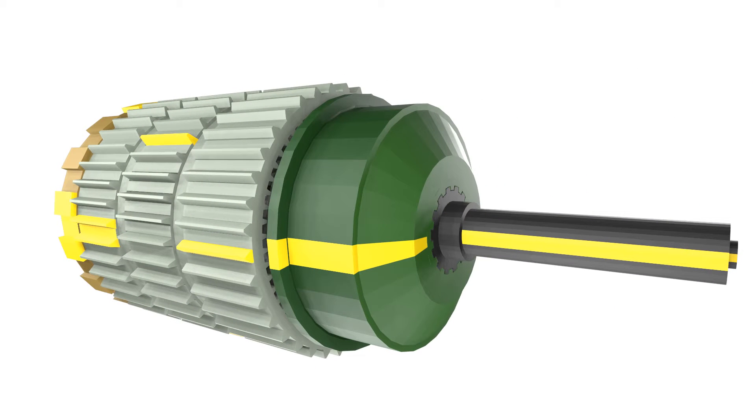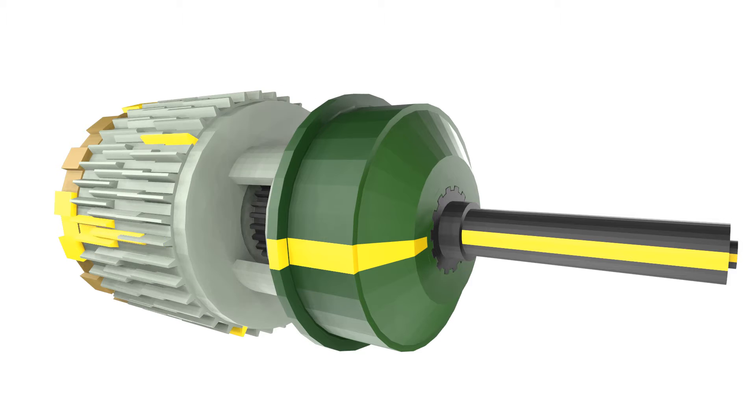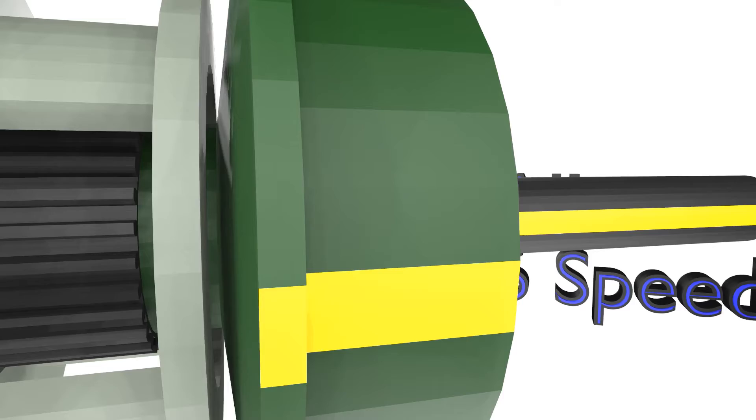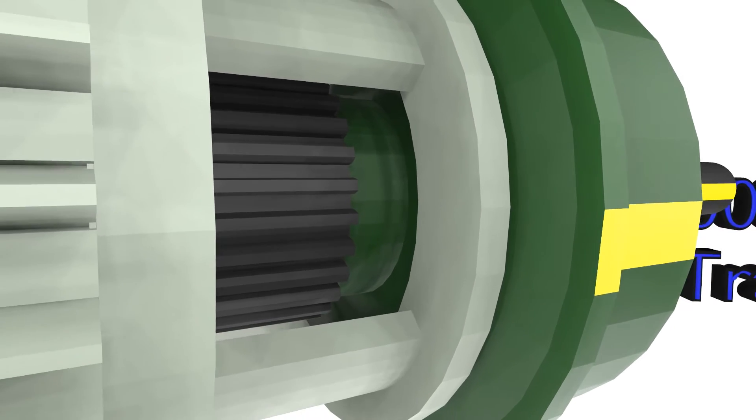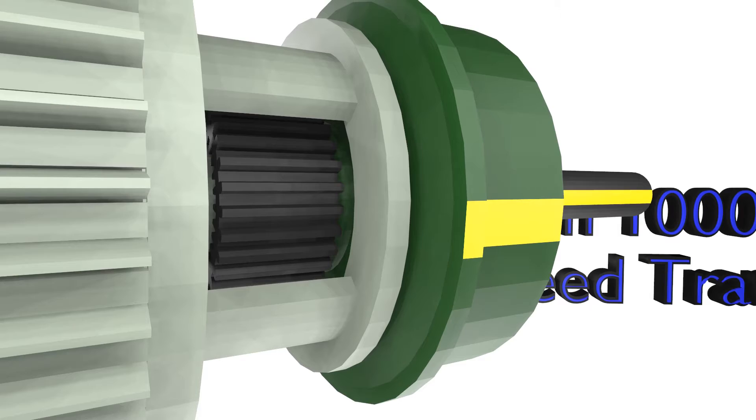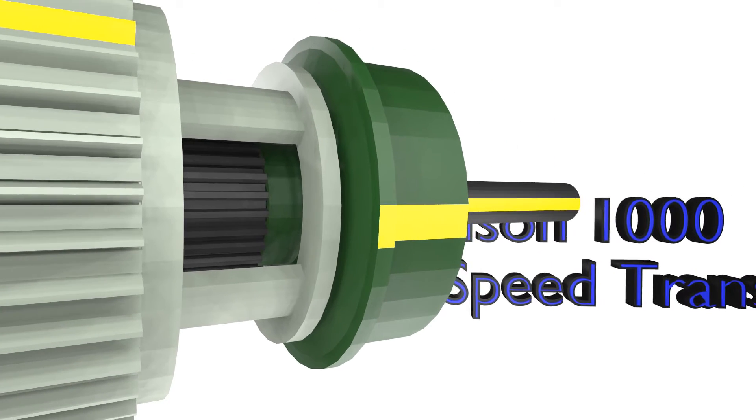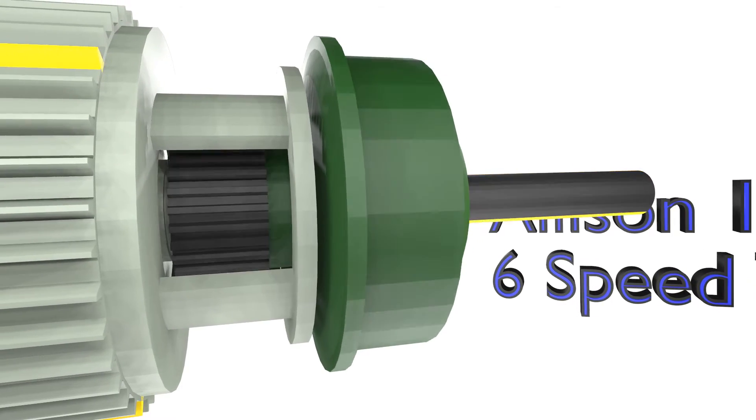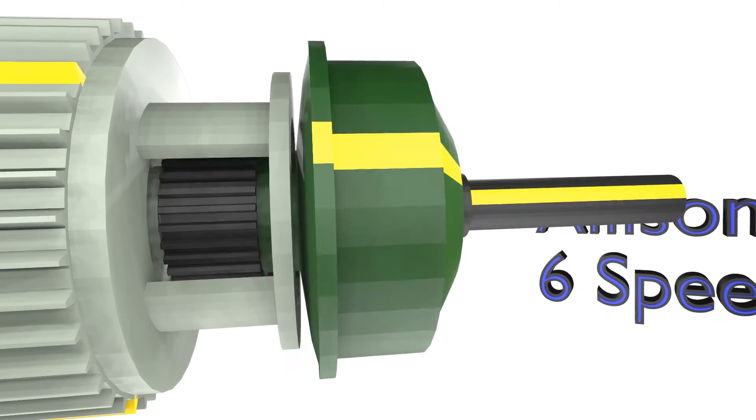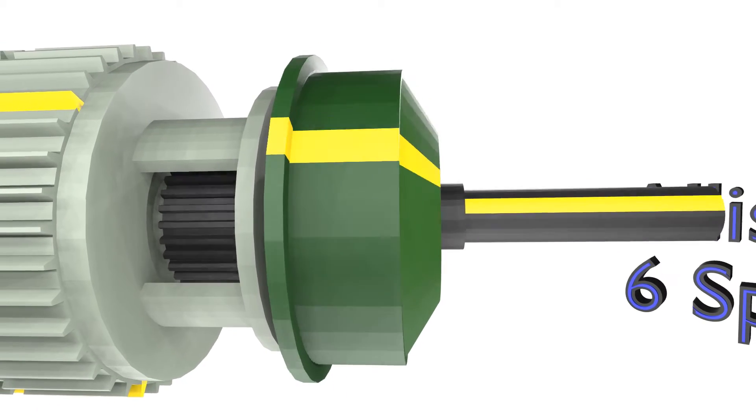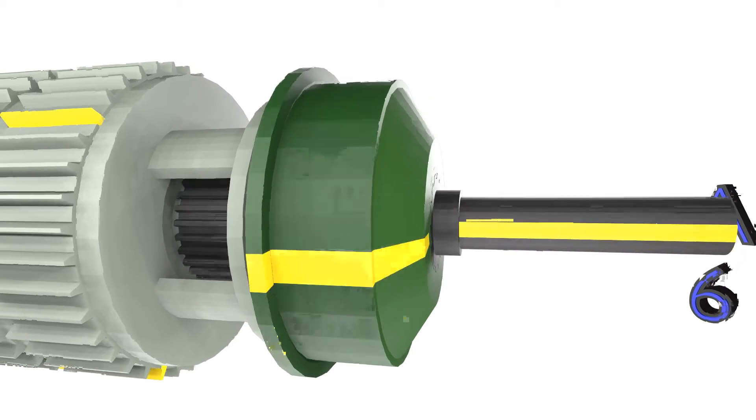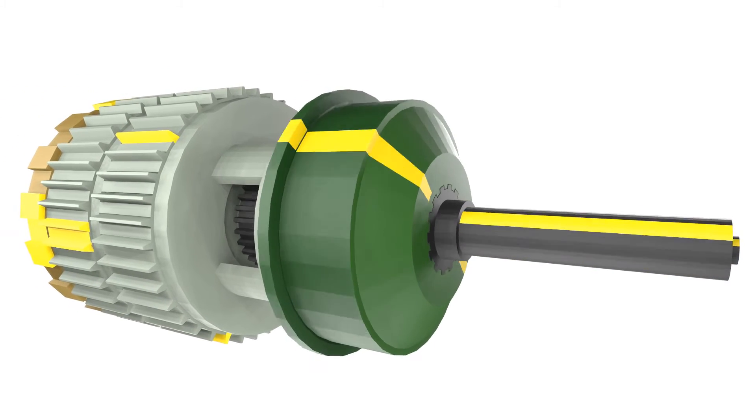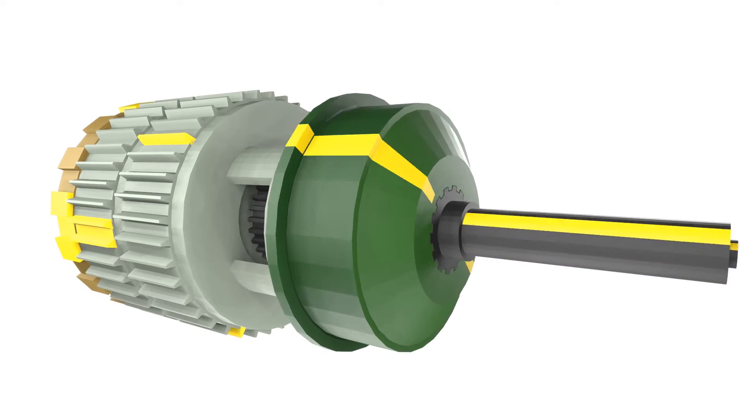It also connects to the sun gear of C3 P1 as they're splined together. The rotating clutch module will always rotate at the same speed as the input shaft. This will cause the rotating clutch module to spin the C3 P1 sun gear that will always rotate as well.